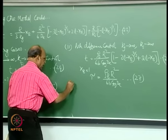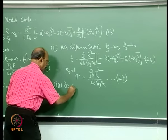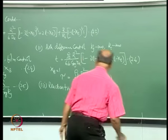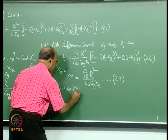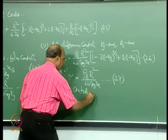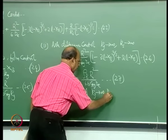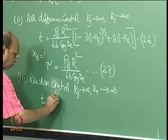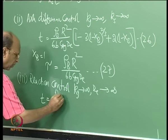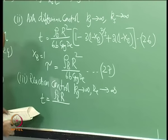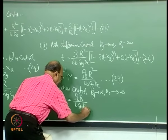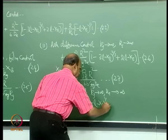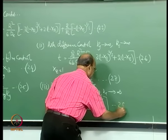The third possibility is reaction control, where K_G tends to infinity and D_E also tends to infinity. The equation is T equal to rho_B * R / (B * C_AG * K_S) * [1 - (1 - X_B)^(1/3)]. This is equation 28.